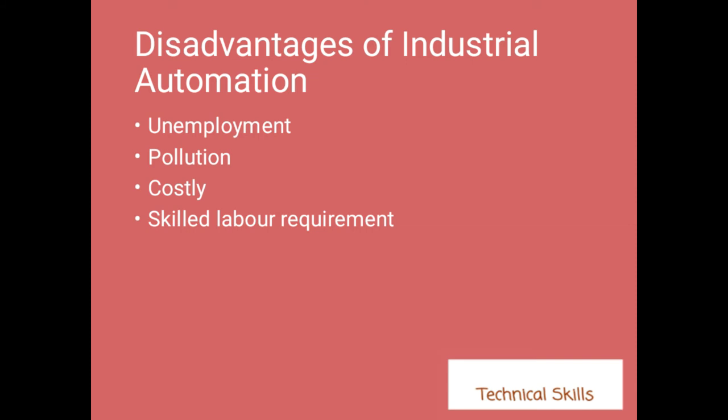The second disadvantage is pollution — industries running on industrial automation are creating pollution. The third disadvantage is that it is costly. You have to put in an initial cost to make a machine, and then there is running cost and maintenance cost. For example, if you make a fan, there is the cost of making it plus electricity cost and maintenance cost.